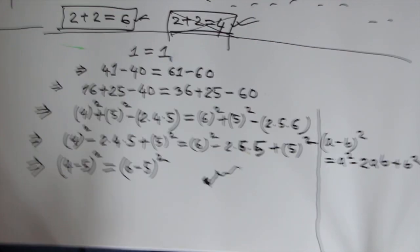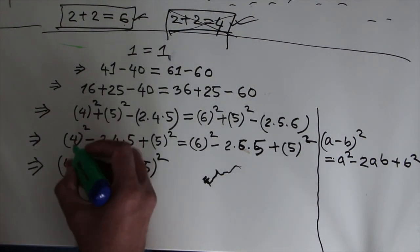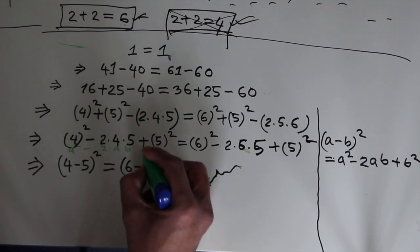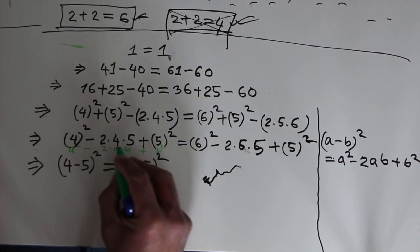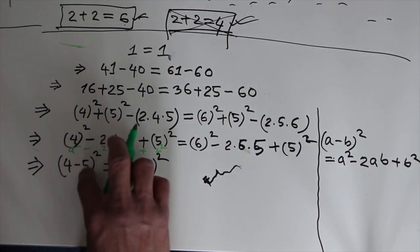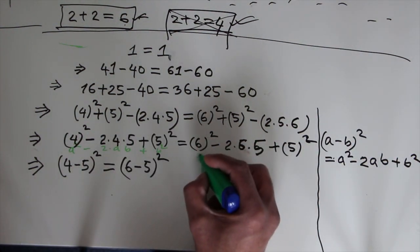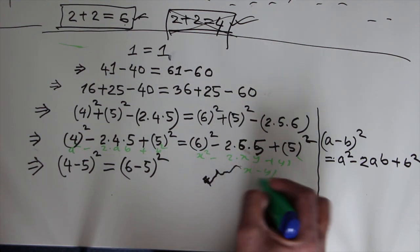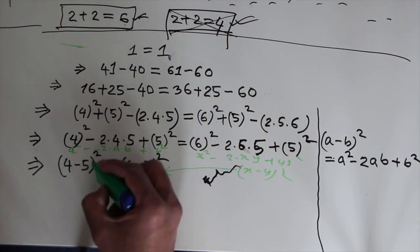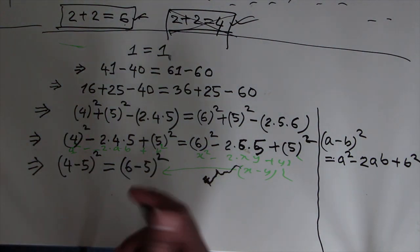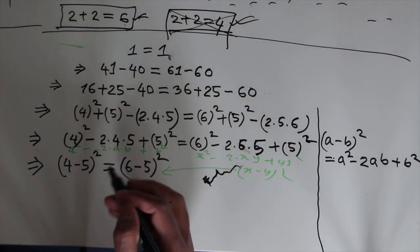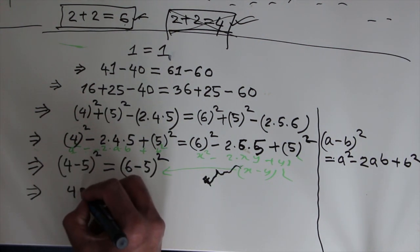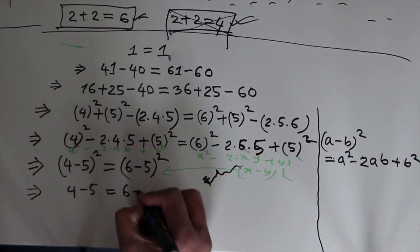To make it more clear: a squared minus 2ab plus b squared equals (a minus b) whole square. For example, x squared minus 2xy plus y squared equals (x minus y) whole square. So from left-hand side and right-hand side I can eliminate both squares, and the remaining is: 4 minus 5 equals 6 minus 5.